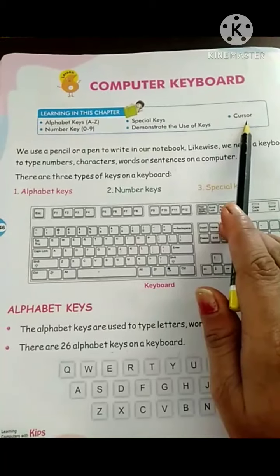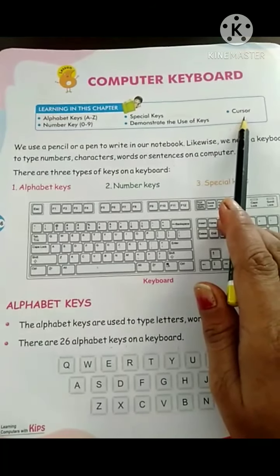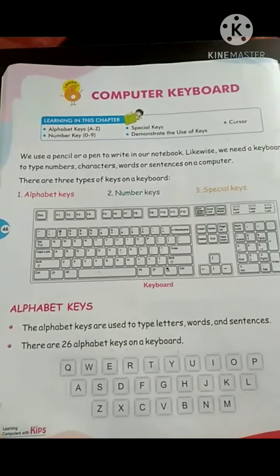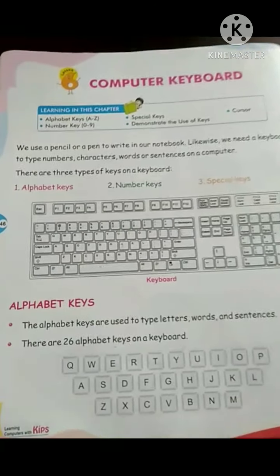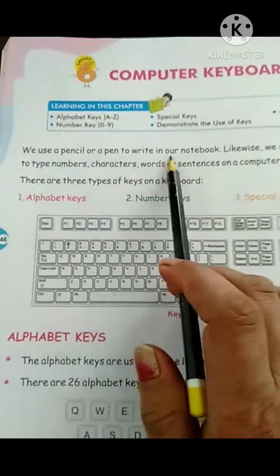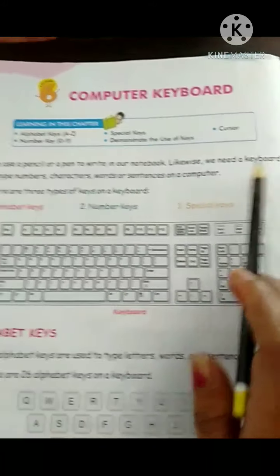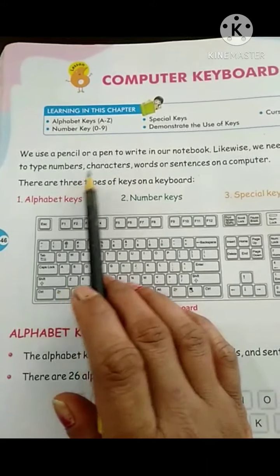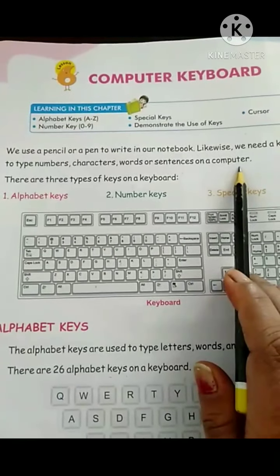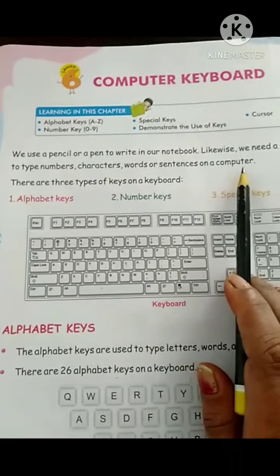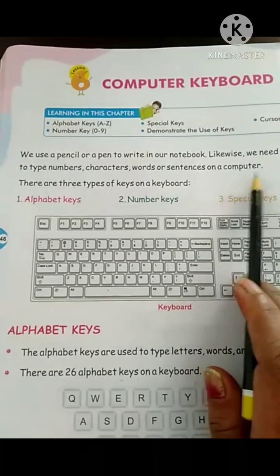Children, in the previous chapter you have learned about parts of a computer. There are four main parts of a computer: monitor, keyboard, CPU, and mouse. We use a pencil or a pen to write in our notebook. Likewise, we need a keyboard to type numbers, characters, words, or sentences on a computer.